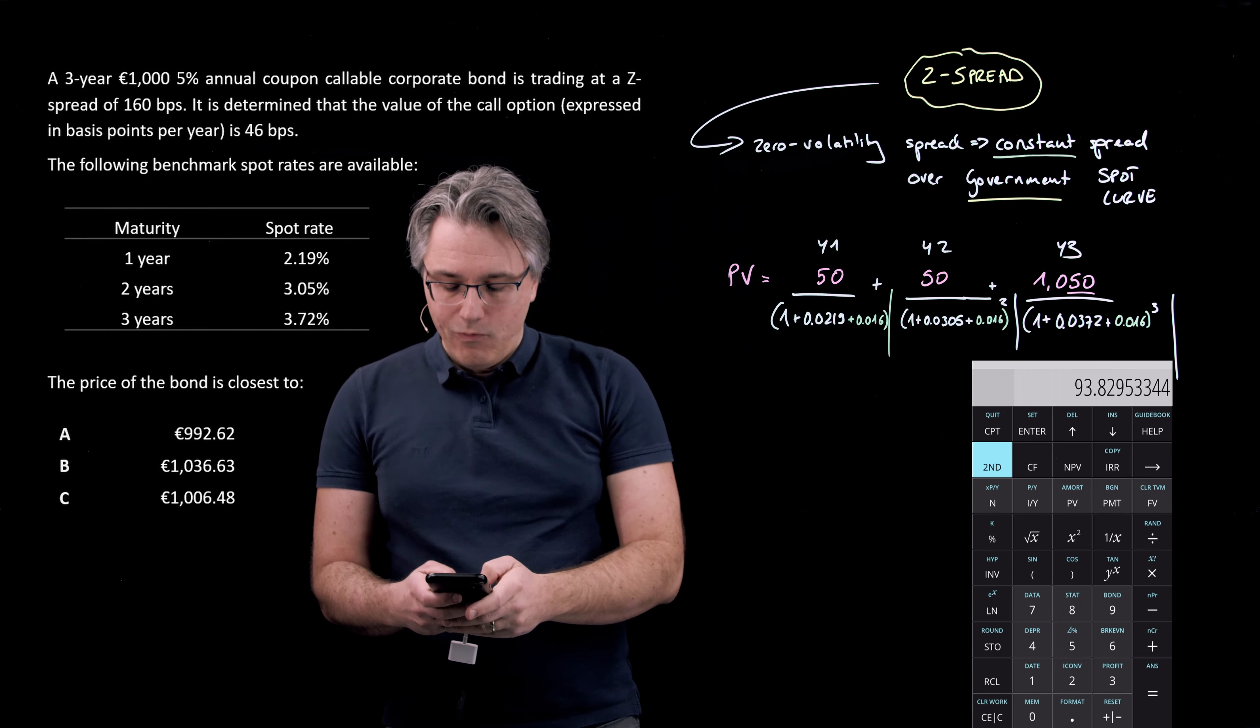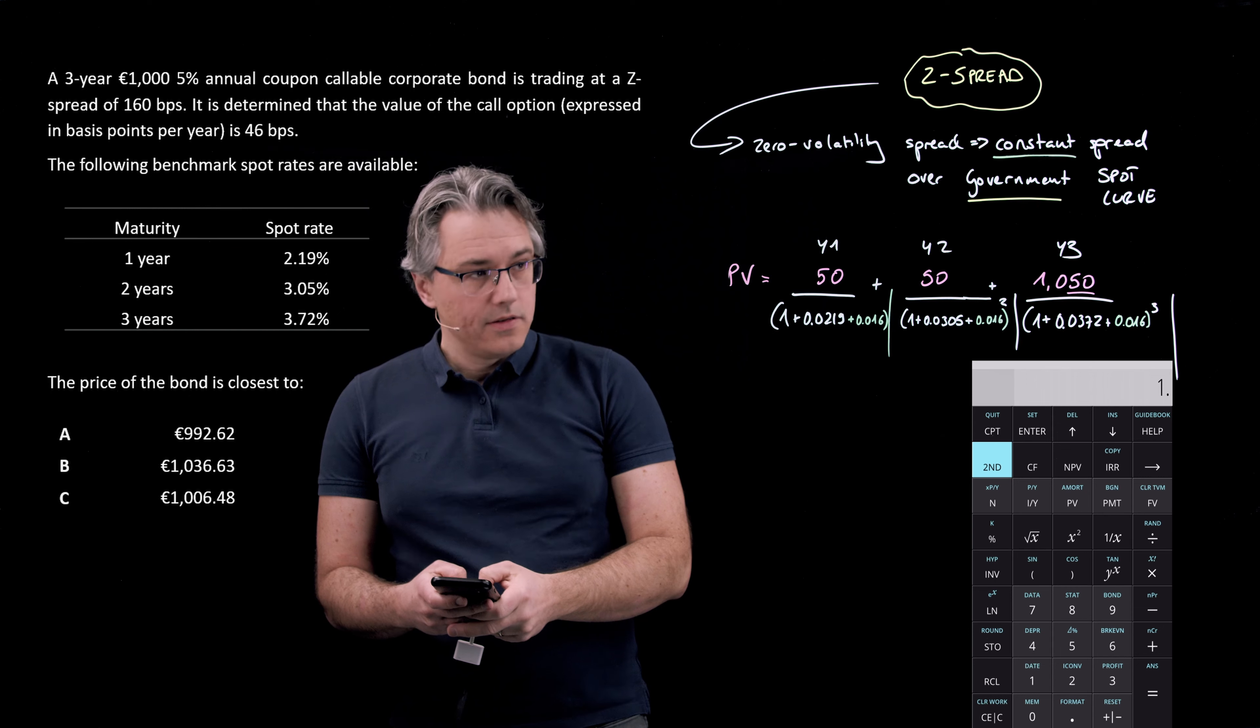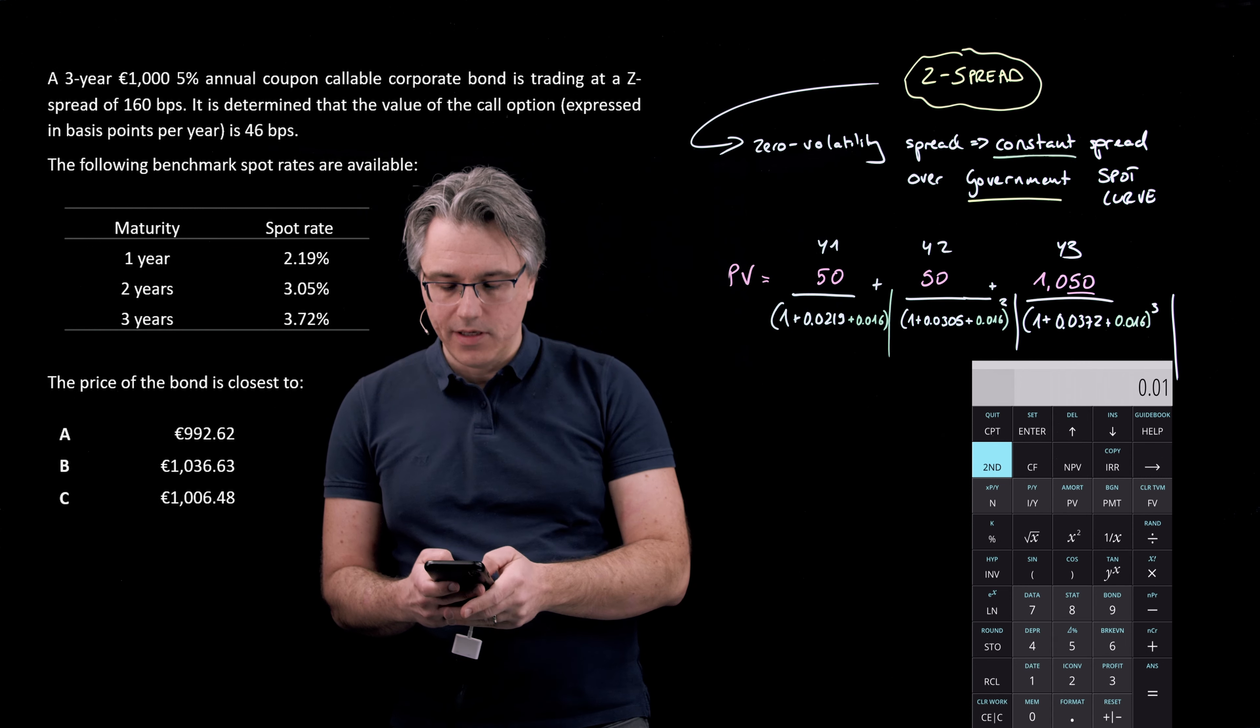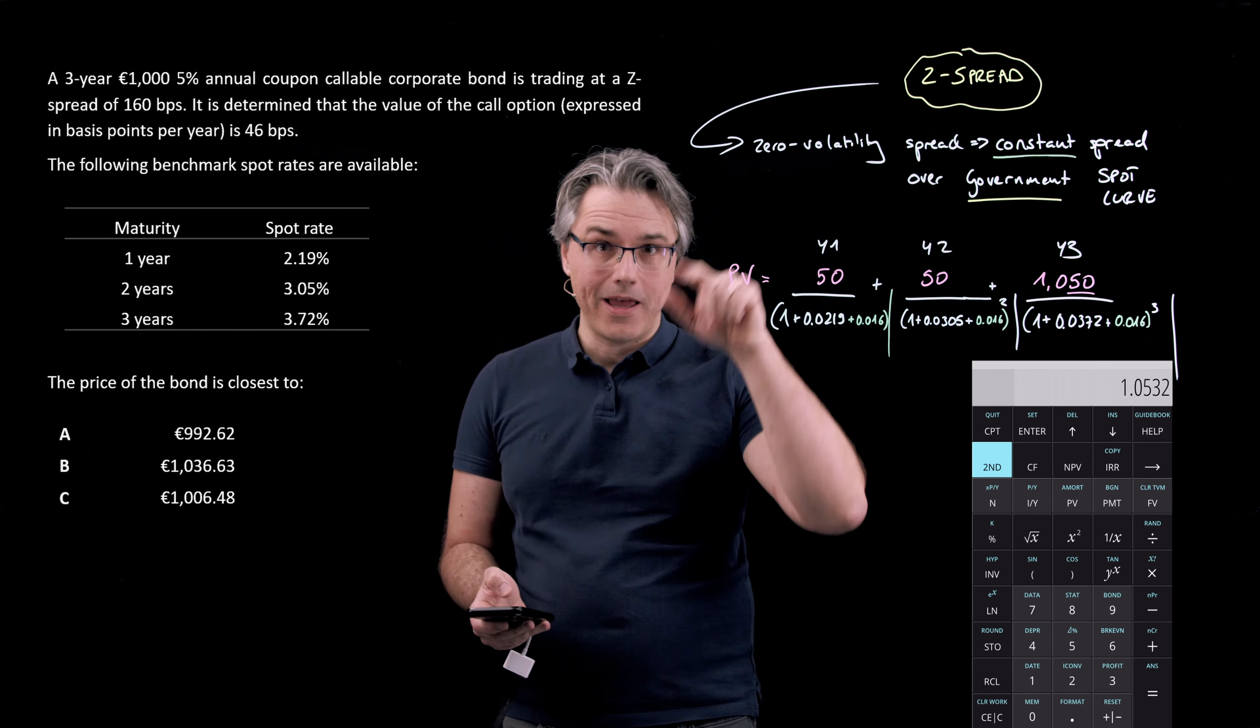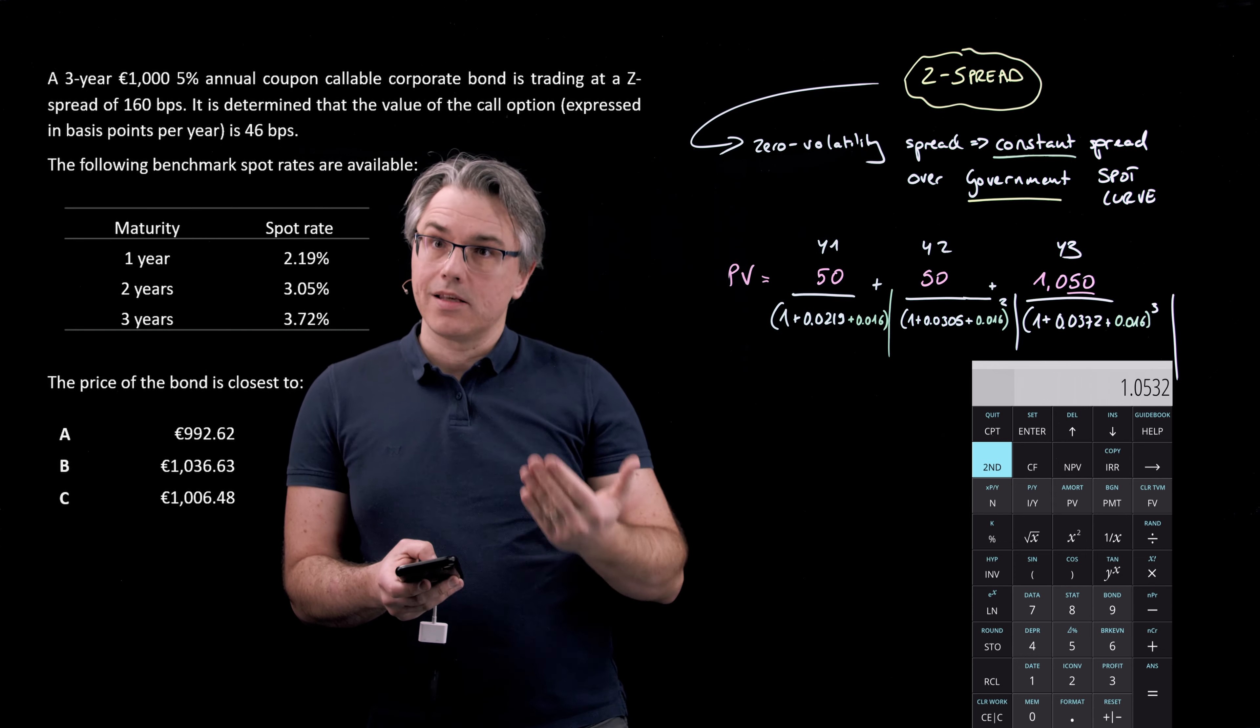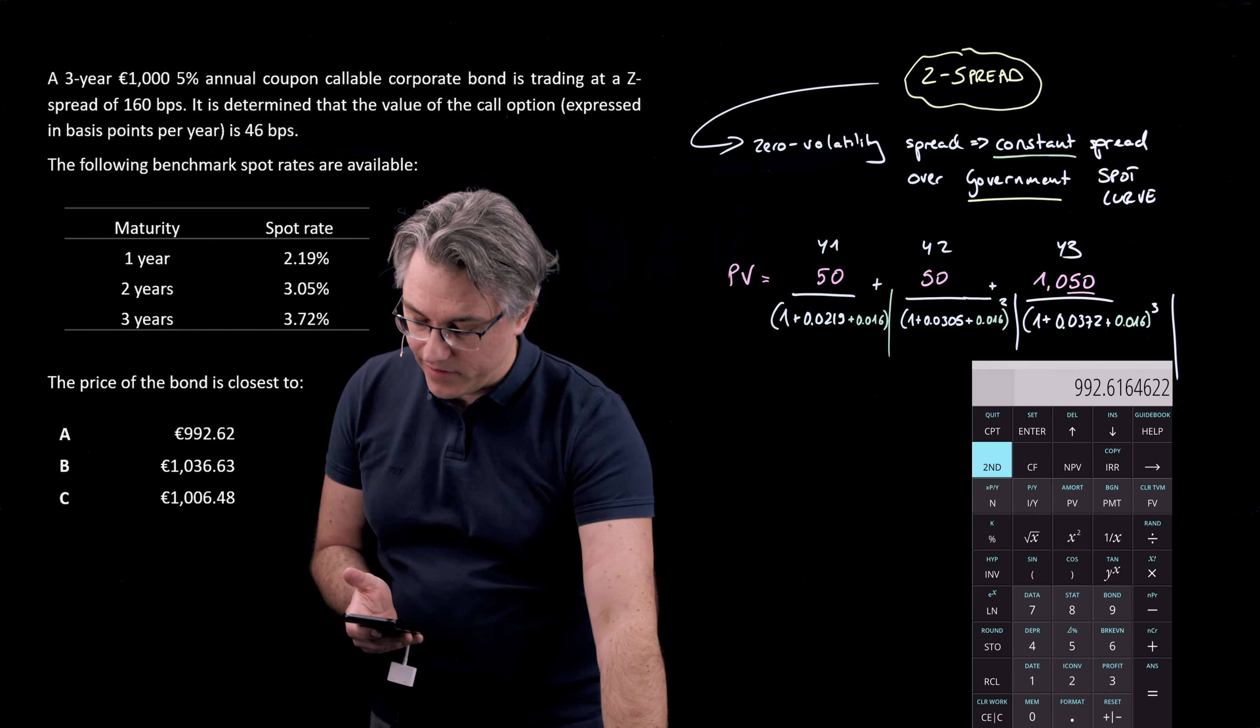And the third one, 1050 divided by, open bracket, 1 plus 0.0372 plus, once again, that 0.016, close bracket, and now hit the key y to the power of x, which is just above the 9 key, and input the exponent, input the power, power of 3. And hopefully, when I hit enter, I'm going to be looking at the right result.